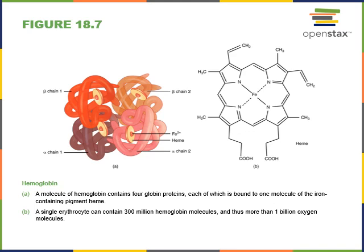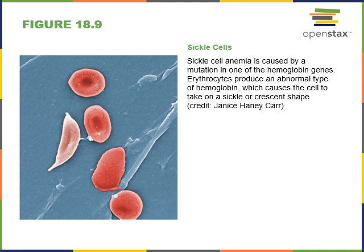Nutritional iron deficiency impairs the ability to produce heme and therefore hemoglobin and erythrocytes, leading to a condition known as anemia. Iron deficiency anemia impairs the ability to transport oxygen in the blood, leading to a feeling of tired weakness. Another form of anemia is sickle cell anemia, which results from a mutation in the gene for hemoglobin. This mutation causes the hemoglobin protein to have a different shape, causing erythrocytes to have a sickle or crescent shape. These sickle-shaped erythrocytes clump together and break easily, decreasing the oxygen transport capacity of the blood.